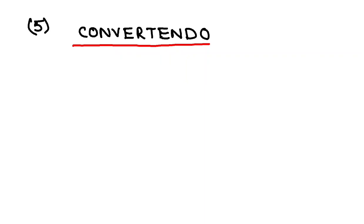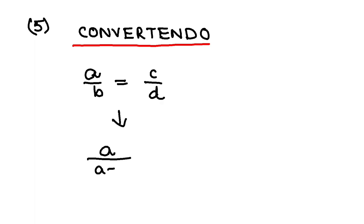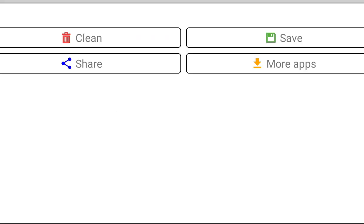Now we shall discuss the fifth property of proportion, that is convertendo. Convertendo says if you have a/b = c/d, then you will have a/(a-b) = c/(c-d). So let us prove this one first. The proof is going to be slightly complicated, so please pay your fullest attention.